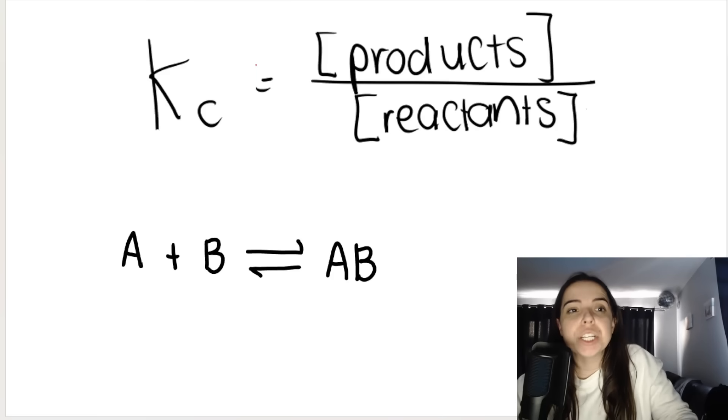Now remember, a chemical reaction on the left-hand side of our double arrow over here, we have things called reactants. And on the right-hand side of our arrow, we have things called products.